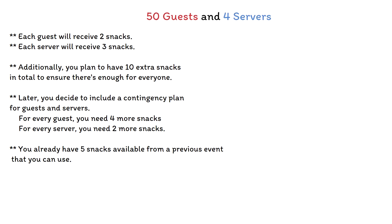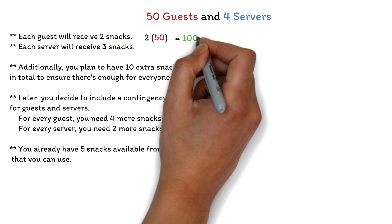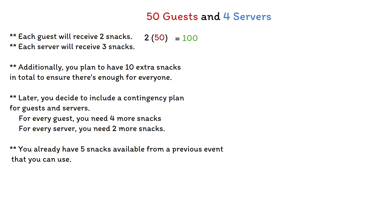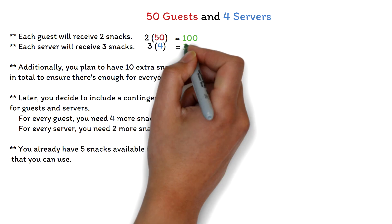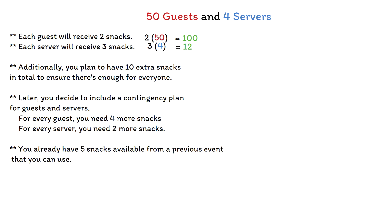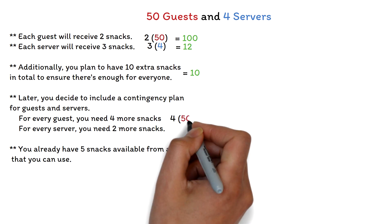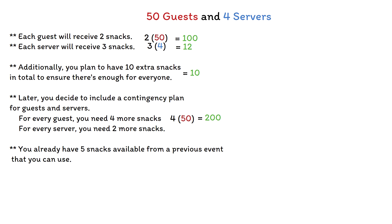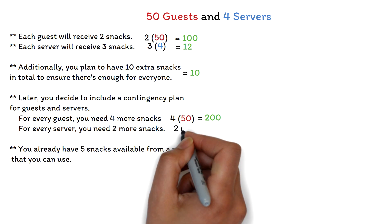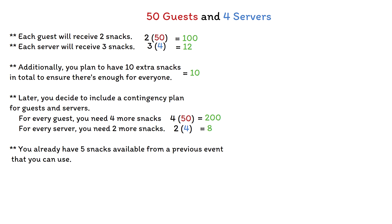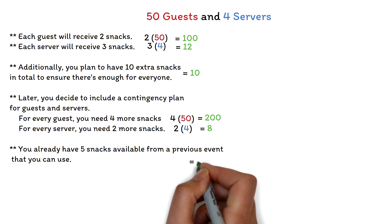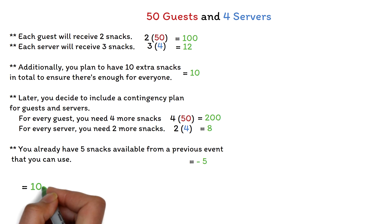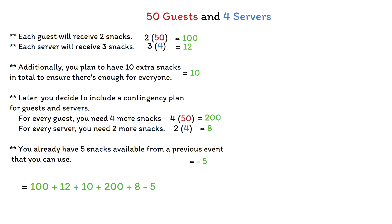You can absolutely answer this without directly implementing algebra — try it out, assuming there are 50 guests and 4 servers. Each guest receives 2 snacks: 2 times 50 gives 100 snacks. Each server receives 3 snacks: 3 times 4 gives 12 snacks. The 10 extra snacks gives us 10. For the contingency plan, every guest gets 4 more snacks: 4 times 50 is 200. Every server gets 2 more: 2 times 4 is 8. You already have 5 snacks, so subtract 5 from the total. Putting it all together: 100 plus 12 plus 10 plus 200 plus 8 minus 5 equals 325.